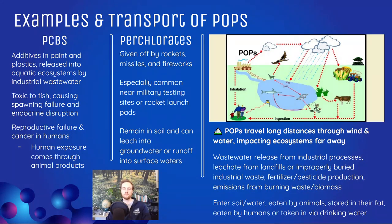Perchlorates are more likely found near military facilities, rocket launch pads, and sites where fireworks are used, since rocket fuel and fireworks are sources of perchlorate discharge. Even if this happens far away, perchlorates can remain in the soil, contaminate plants, or leach into groundwater. If you draw from an aquifer for well water or to irrigate fields, perchlorates can be passed into surface waters and onto agricultural fields. The big takeaway for POPs: they last a long time, they're persistent in ecosystems and organisms' bodies, and they can have impacts far from where they're produced and released.